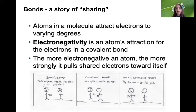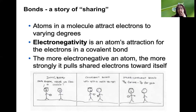A regular non-polar covalent bond is when two friends split the cookie 50-50, so the electrons are shared equally. A polar covalent bond is when one of the friends takes seven-eighths of the cookie, leaving just a small piece — that friend is more electronegative. And finally, an ionic bond, which is the ultimate non-sharing, is when your friend eats the whole cookie and leaves nothing for you.